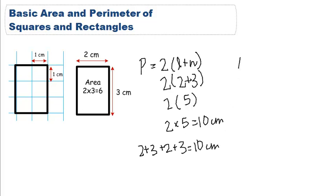Area is very similar to our area of a square, but this time we do length times width because we are going to have two different numbers. So here area is 2 times 3 or 6 centimeters squared.